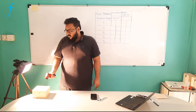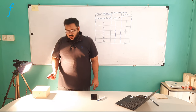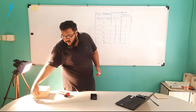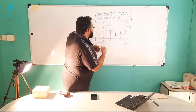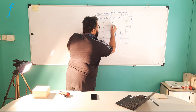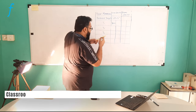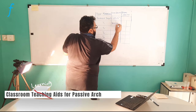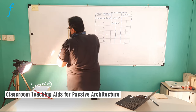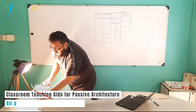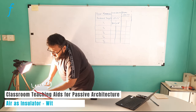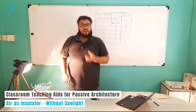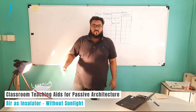One minute is up. The first reading of the surface is 30.6 degrees and the inside reading is 24 degrees. I will place the thermometer back inside and repeat these steps after every minute for five minutes.